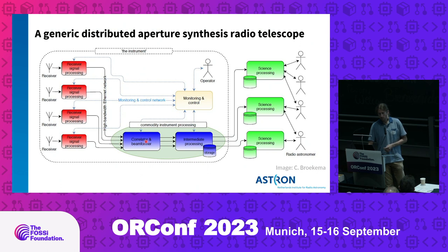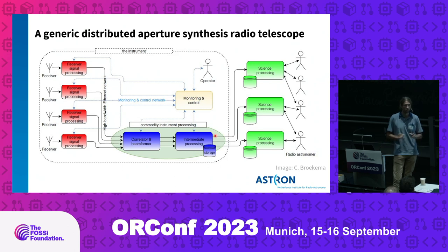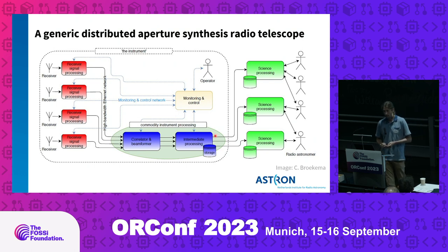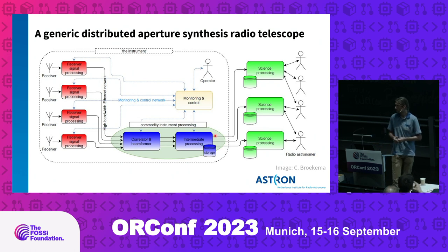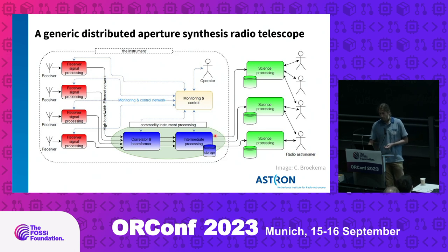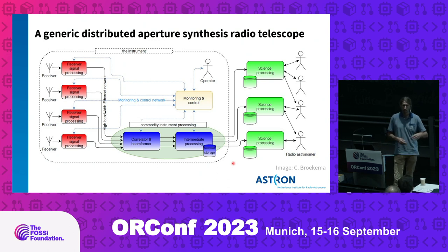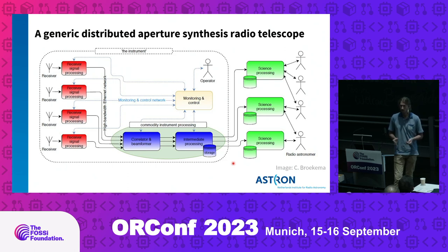This is still somewhat real time. Then we go to offline processing where we have our intermediate data products, which also has to be done within hours or days because we cannot store the volumes of data we're handling. After this intermediate processing, we make the data available either to an archive or to an astronomer that requested a certain observation. At ASTRON, we are very broad as an institute — we develop everything from new antenna concepts all the way to analyzing data with our astronomers, for all kinds of radio telescopes in the world.